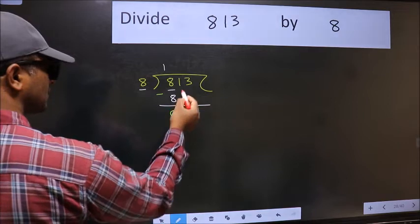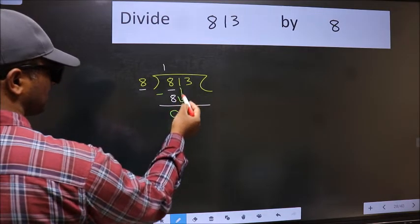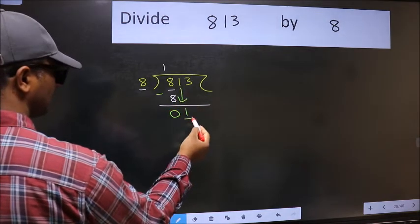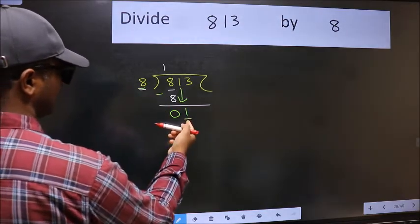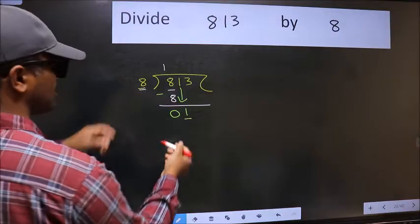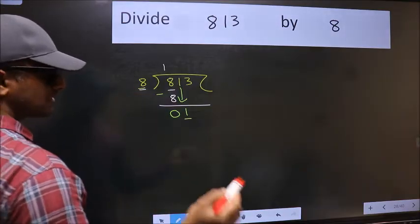After this, bring down the beside number. 1 down. Now here we have 1 and here 8. 1 is smaller than 8, so we should bring down the second number.